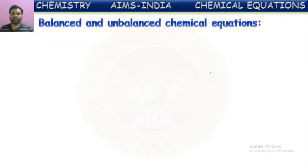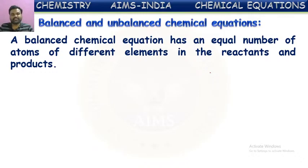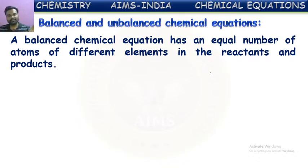Now, balanced and unbalanced chemical equations. A balanced chemical equation has an equal number of atoms of different elements in the reactants as well as in the products. That means in a chemical equation, if the number of atoms on the reactants side and the number of atoms on the products side are the same, then it is said to be a balanced chemical equation.